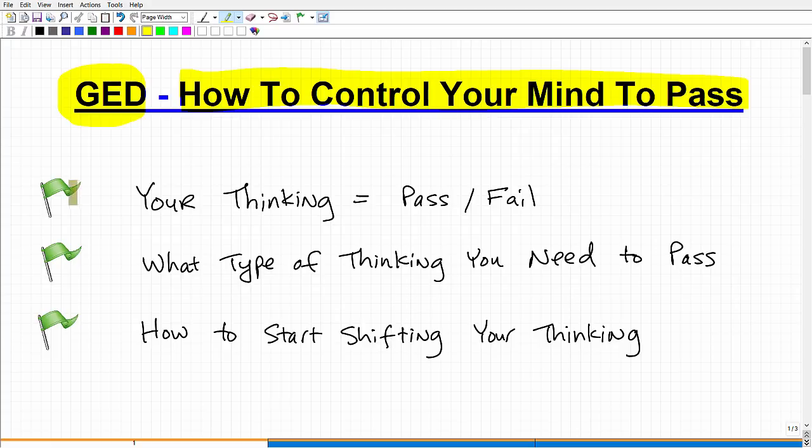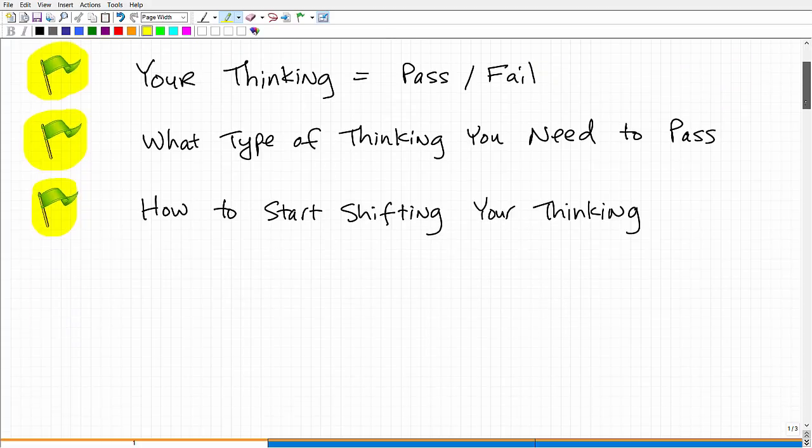So the three things I'm going to cover here: first, how your thinking really does determine whether you're going to pass or fail the GED. Second, what type of thinking do you need to have in order to pass? And third, how do you shift your thinking? So if you're not thinking correctly, how do you make that shift? With that being said, let's get right to it.